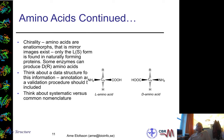Another property of amino acids is that they are only in the L-form. However, D-form amino acids do exist and can be produced by enzymes.